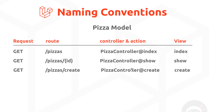Next up, controllers — again pretty simple. We just call the controller whatever the model is called, followed by 'Controller'. So in our case, 'PizzaController'. If we had a Ninja model it would be 'NinjaController' — capital P for Pizza, capital C for Controller.